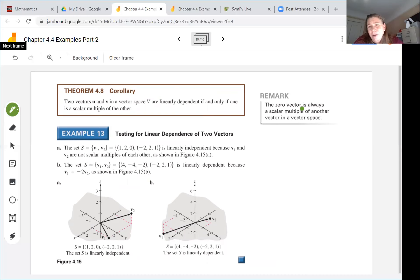And then make sure you remember this important remark that the zero vector is always a scalar multiple of another vector in a vector space. It might seem kind of trivial but remember that zero is just zero times the other values in the vector.